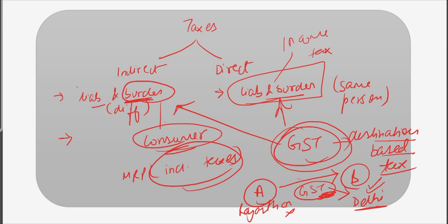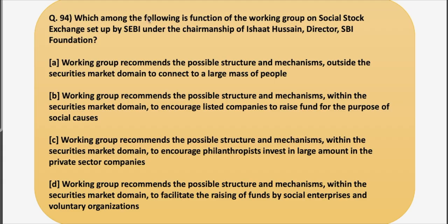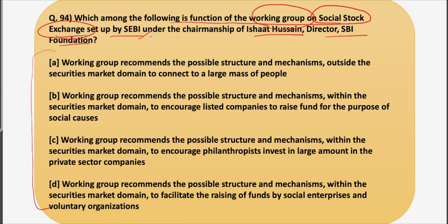Moving on to the next question. I hope you have understood the concept of GST as a destination-based tax and the difference between indirect and direct tax. This question asks: which among the following is the function of the working group on Social Stock Exchange set up by SEBI under the chairmanship of Ishaat Hussain, the director of SBI Foundation? Four recommendations have been given and you have to identify which one the working group gave. Let's first see the concept of Social Stock Exchange.